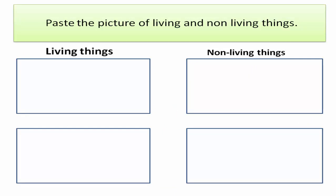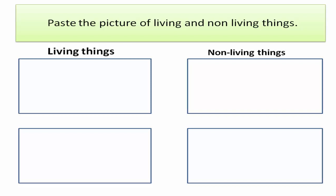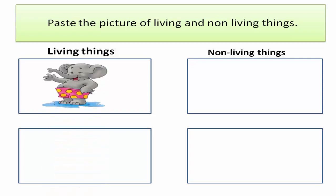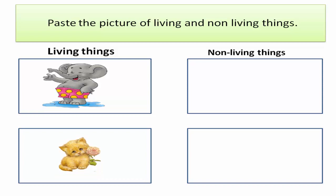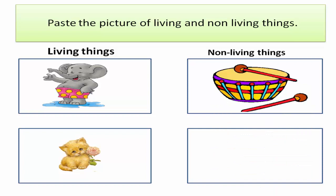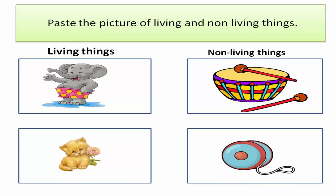Living things — as you know, living things can move, grow, and take in air to breathe. Living things: elephant and cat, because they need food and water to live. Now we come to non-living things: drum and yo-yo, because non-living things do not need food, water, and air.